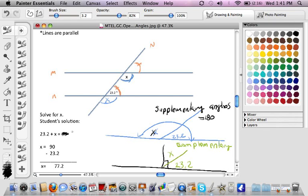plus X equals 180 because we're dealing with supplementary angles. Error number two is an error in—if we